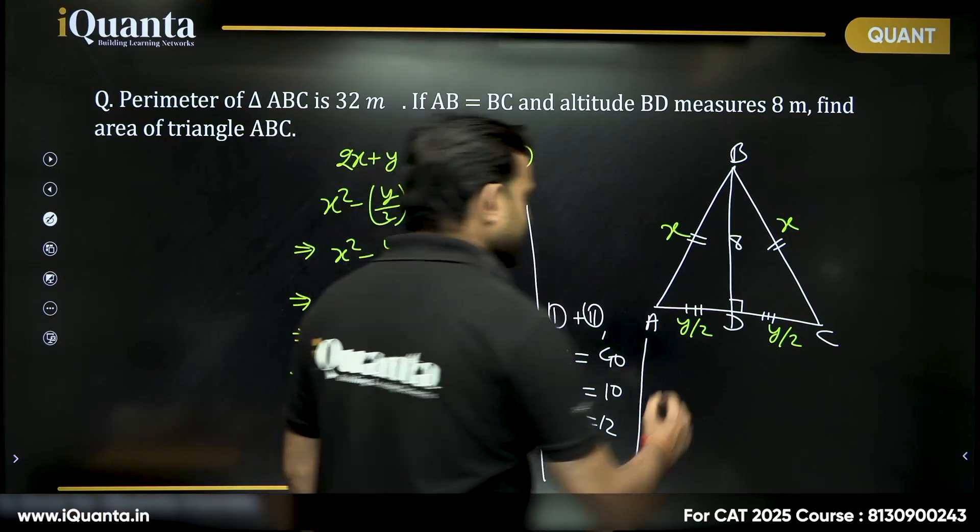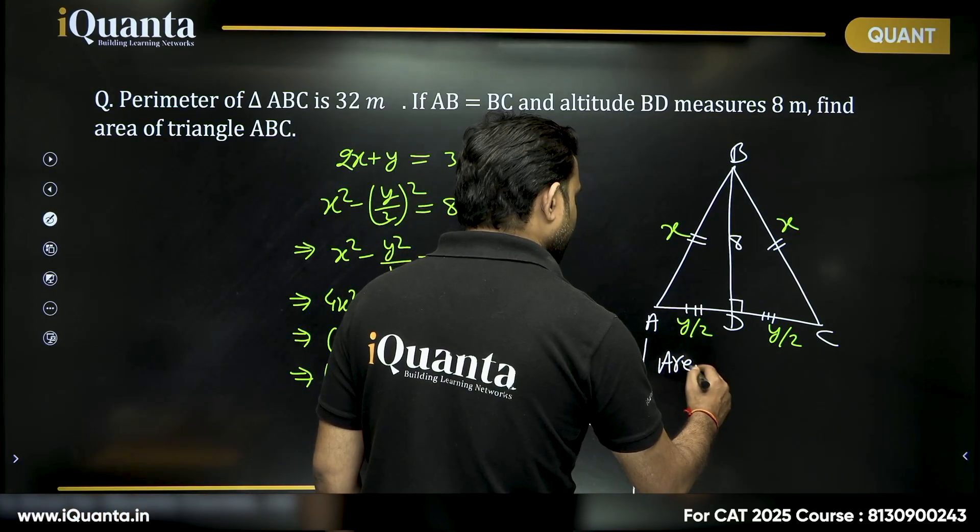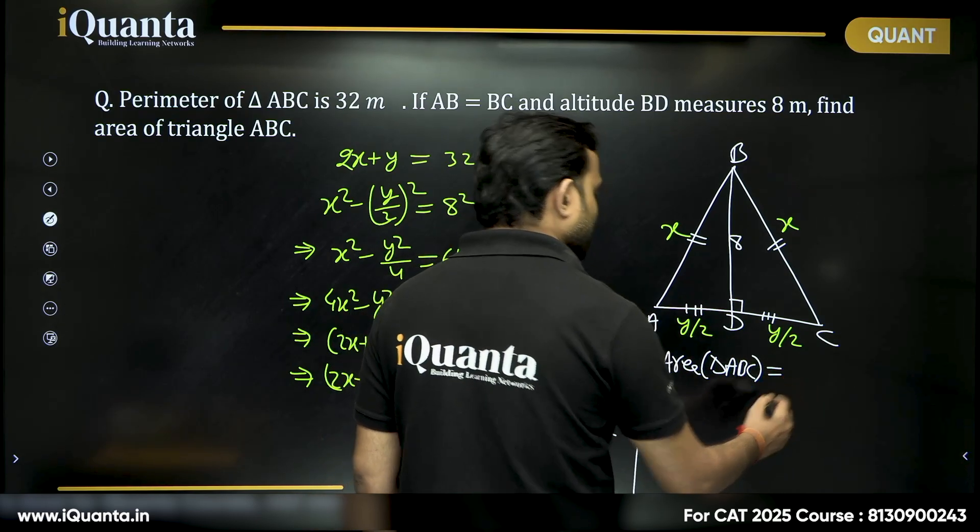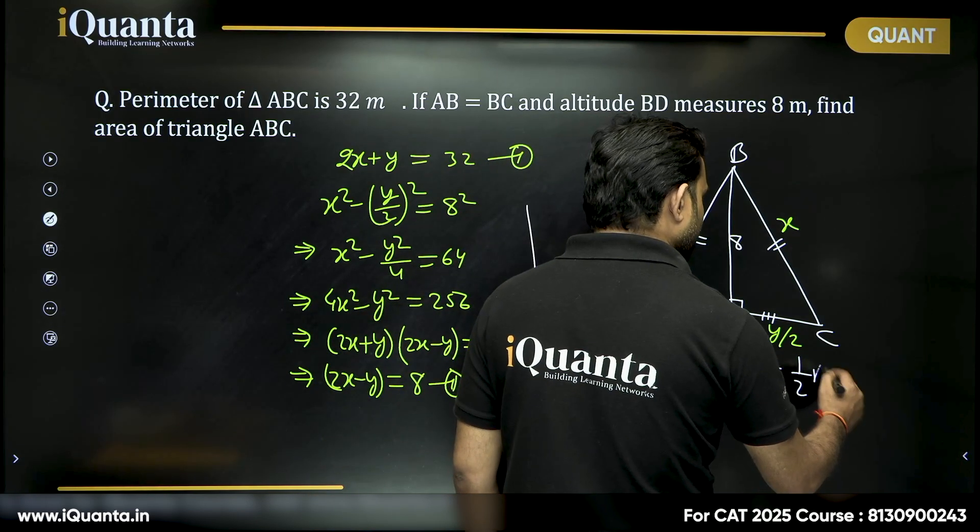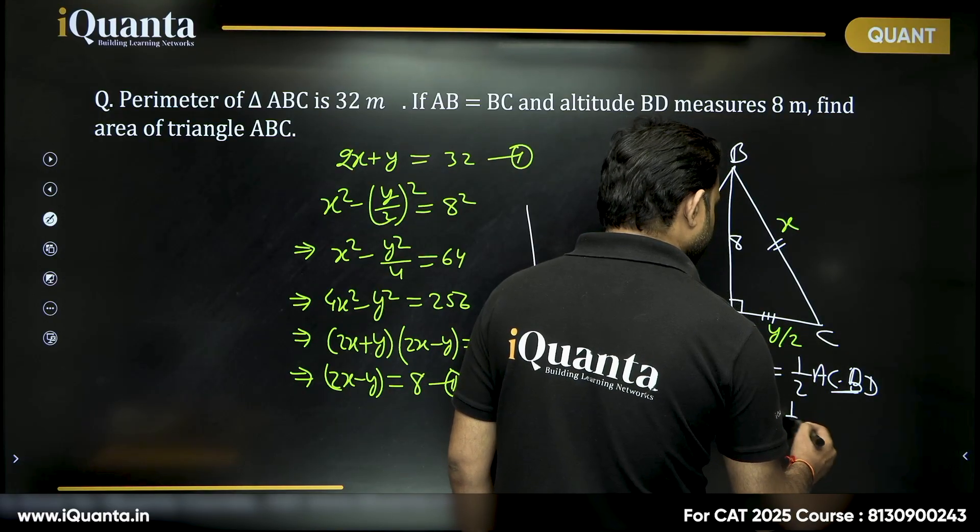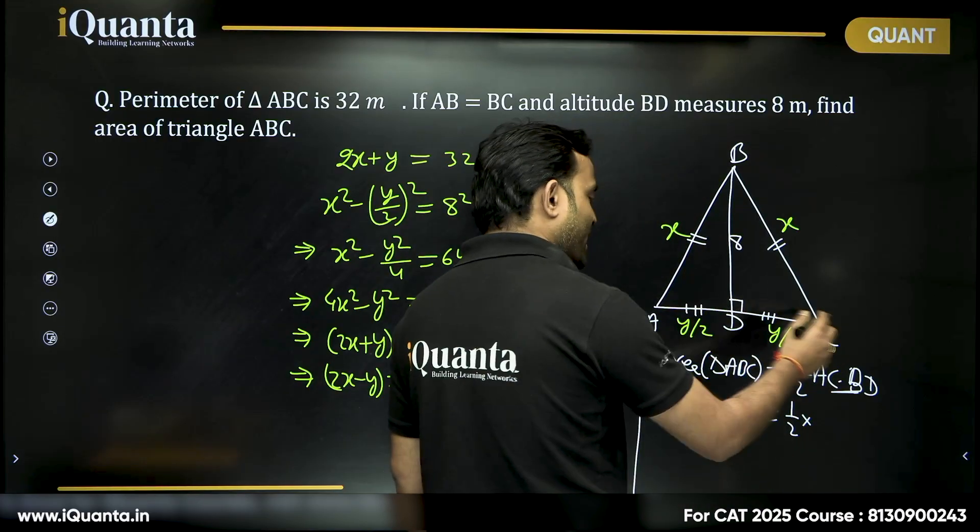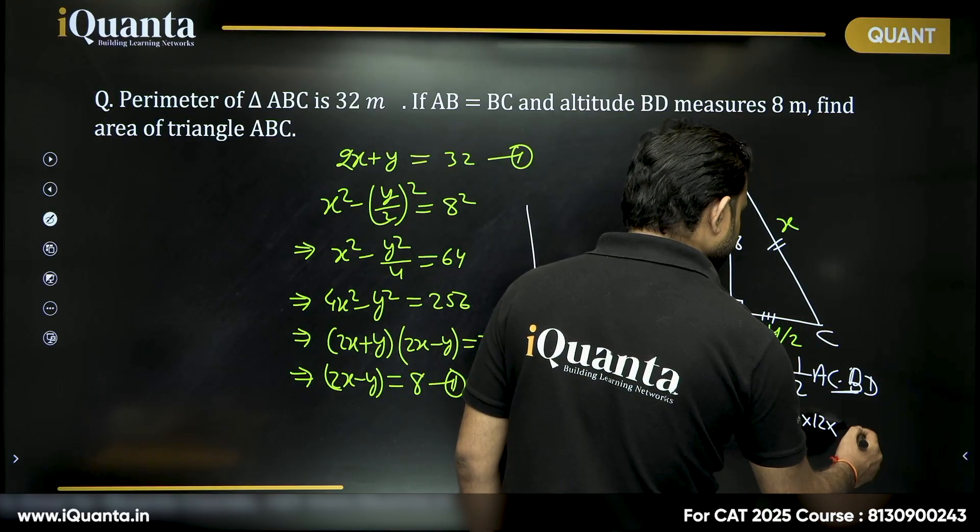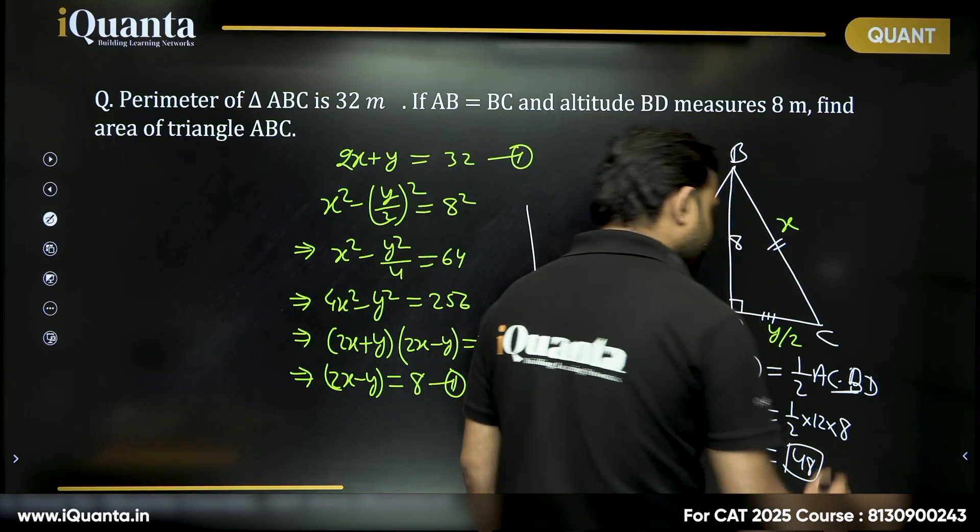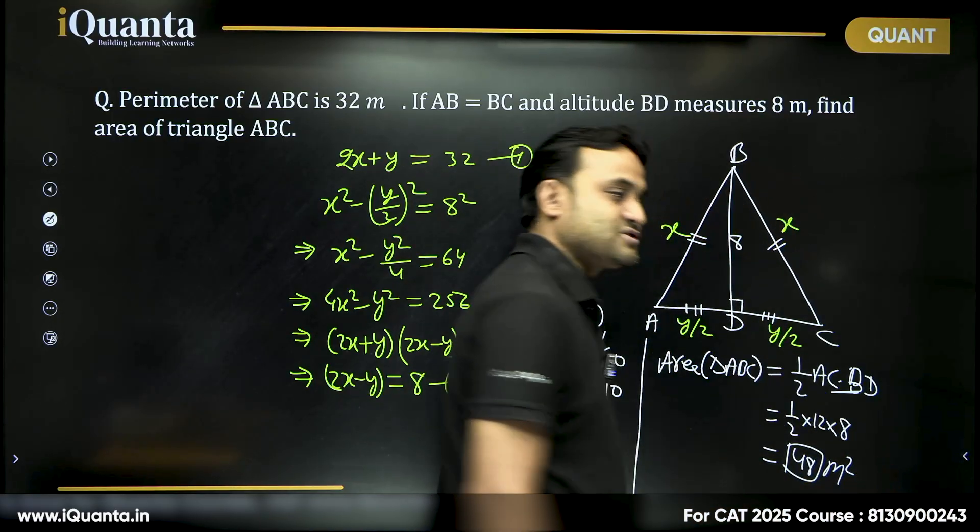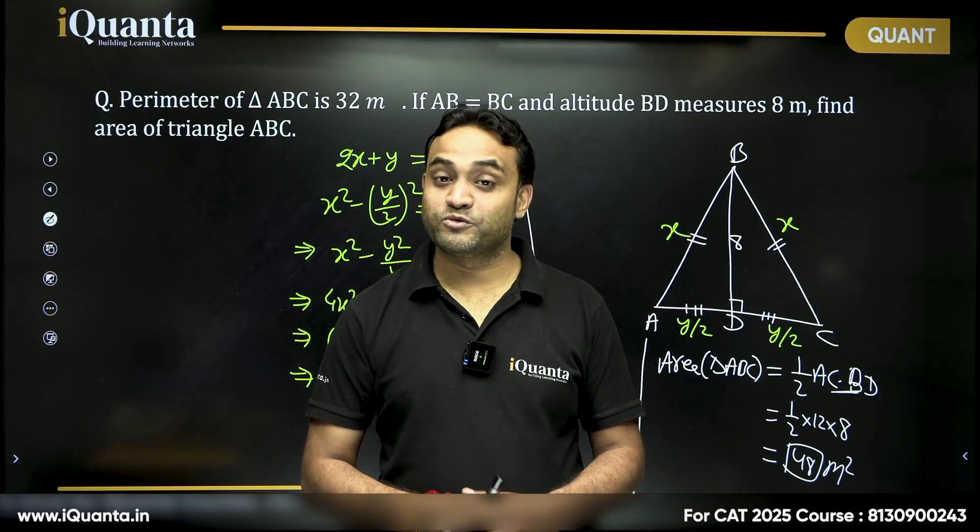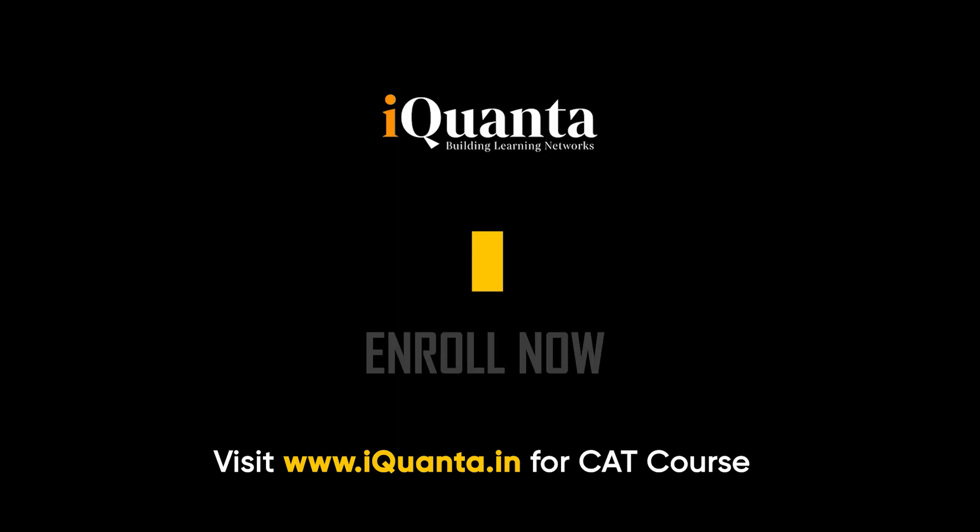Now, we can find the area very easily. Area of triangle ABC will be equal to half of base AC into height which is BD. So, half of what is AC? AC is Y, Y is 12. What is BD? BD is 8. This will be equal to 6 into 8 which is 48 meter square and that's your answer. I hope you got this correct. Thank you.